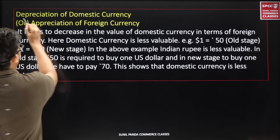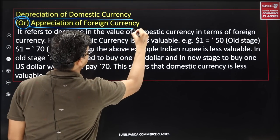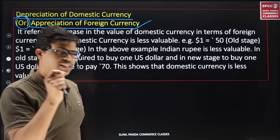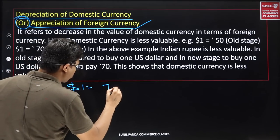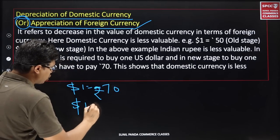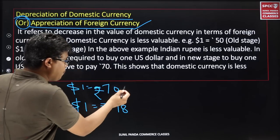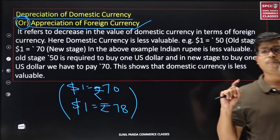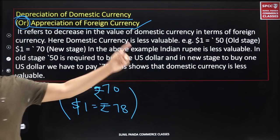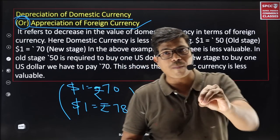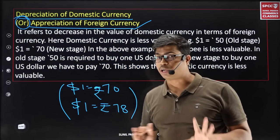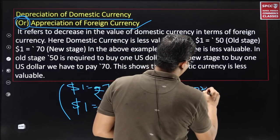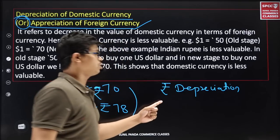Depreciation of domestic currency, or you can say appreciation of foreign currency. Our currency is depreciating and foreign currency is appreciating. For example, first it was 70 rupees for 1 dollar, and today it is 78 rupees. I am talking about 2 currencies — the dollar and the Indian rupee. Earlier I was paying 70 rupees for 1 dollar; today I am paying 78 rupees. That means my rupee has reduced in value — our currency is depreciated.